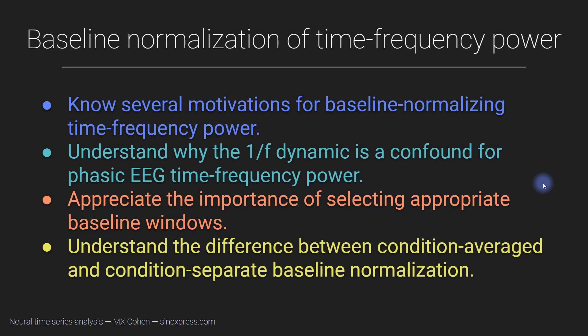Continuing the discussion of normalizing power — time frequency power in particular — for getting rid of the pesky one-over-f issue. In this video I'm going to talk more about the decibel formula. I'll start by discussing various motivations for baseline normalizing your data, and then spend most of the video talking about the importance of selecting an appropriate baseline time window, because that can be a pretty tricky issue.